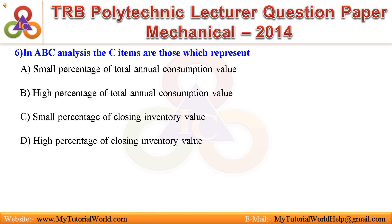Question 6: In ABC analysis the C items are those which represent. A. Small percentage of total annual consumption value. B. High percentage of total annual consumption value. C. Small percentage of closing inventory value. D. High percentage of closing inventory value. Answer is: Small percentage of total annual consumption value.